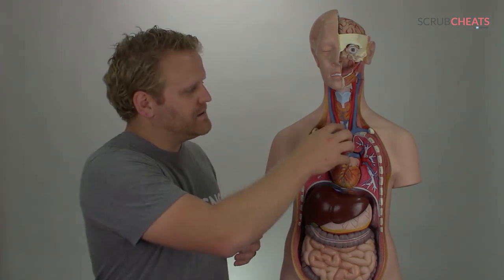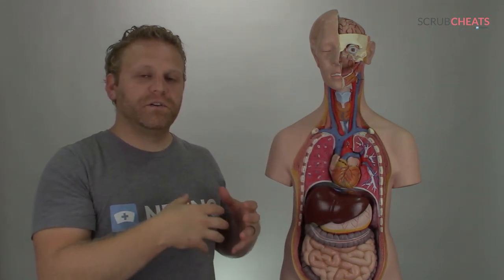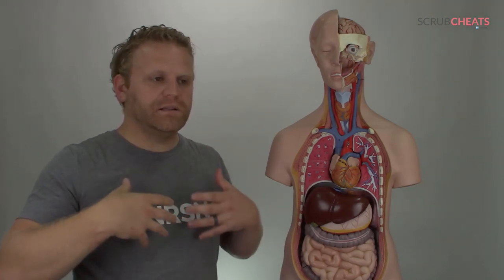Now trach masks are going to fit, let's say a patient has a tracheostomy, a trach mask is going to fit right over that and it's going to deliver humidified O2 to keep the trachea humidified.